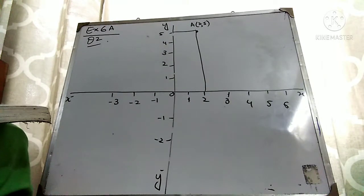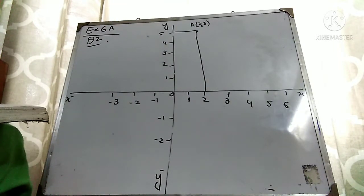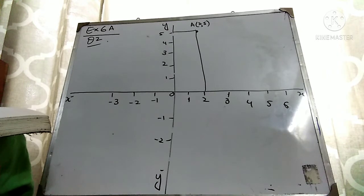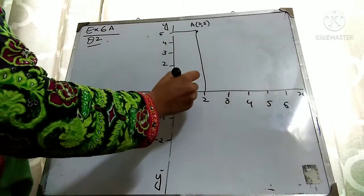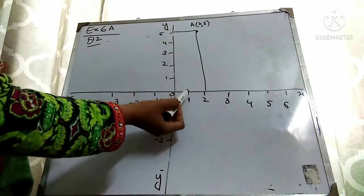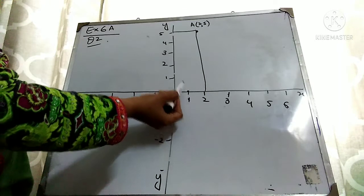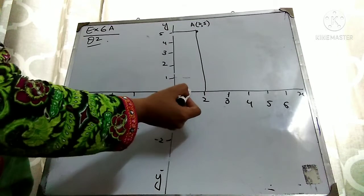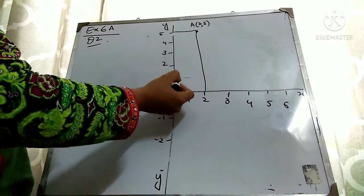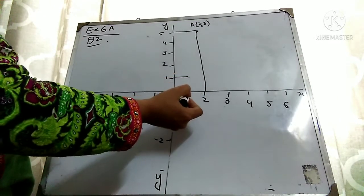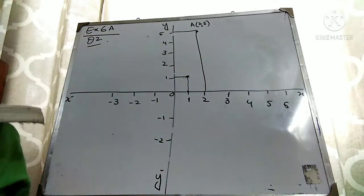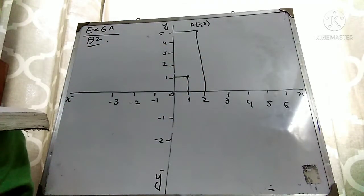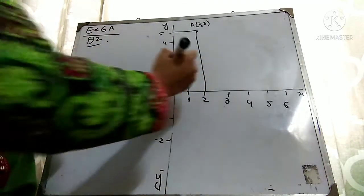Next is point B at (1, 2). X is 1 and Y is 2. Here X is 1 — move it up to Y which is 2. So this is your point B at (1, 2).